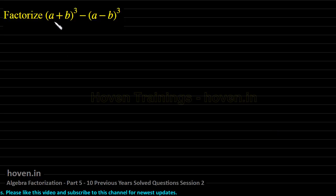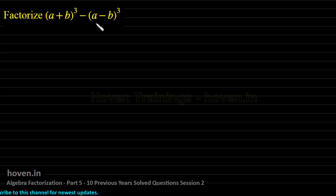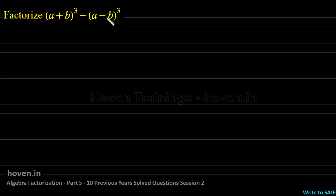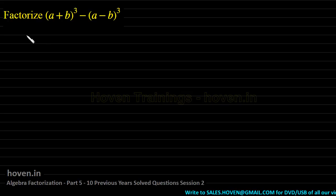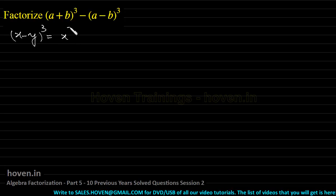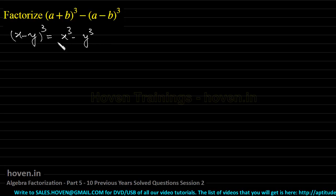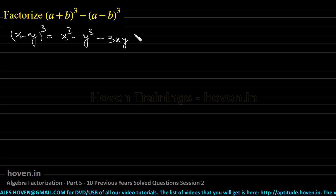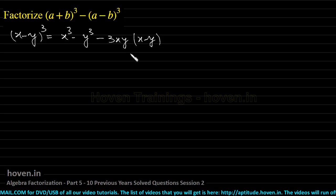The next question says: factorize (a+b)³ − (a−b)³. Whenever you see such expressions, first observe the power — it is a power of 3. This factorization will probably use one of the identities that involve cubes. Let us first write that identity so we can find some way to proceed. We recall the identity for a³−b³.